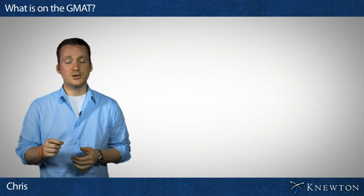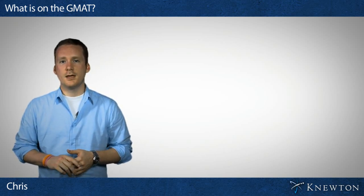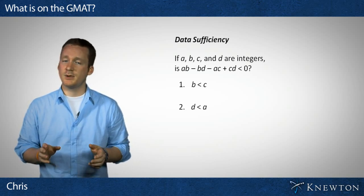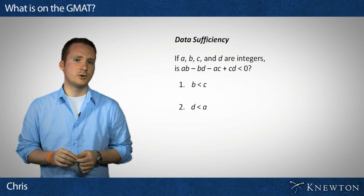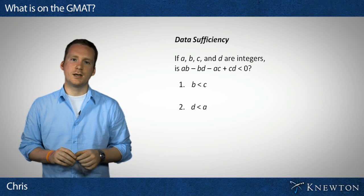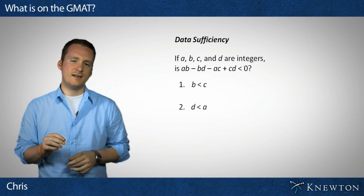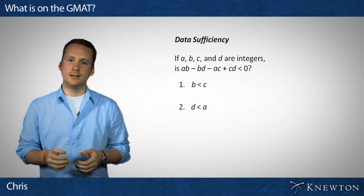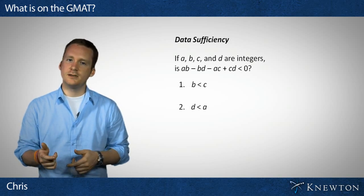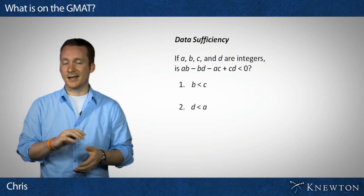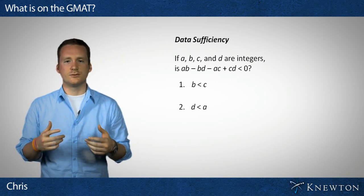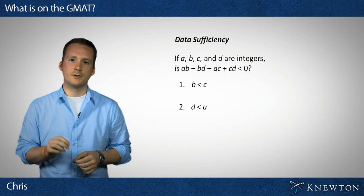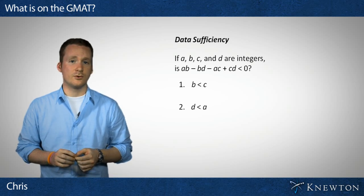Now let's look at the actual question types on the GMAT, starting again with quantitative. One question type is called data sufficiency — something most people have never seen unless they've taken the GMAT before, because it was created specifically for this test. You get a question and two pieces of data. Your task isn't to answer the question itself, but to determine how much of that data you'd need to answer it — just one piece, both together, or neither. It's a strange framework, but it's definitely a big stumbling block for many students when they first start.